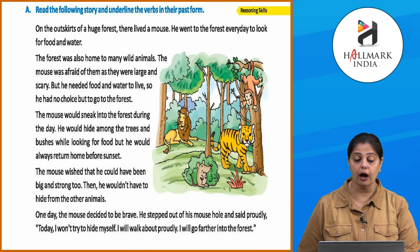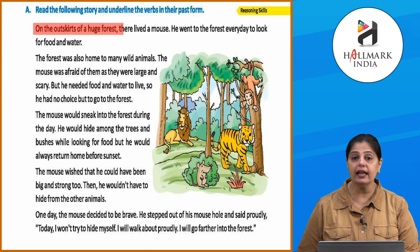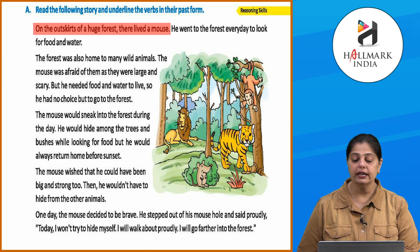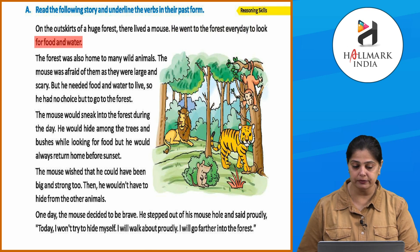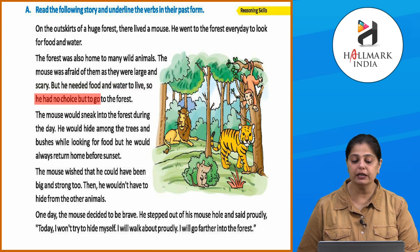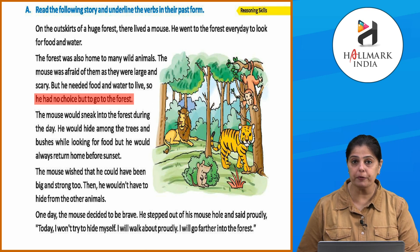Now let's attempt this exercise. Read the following story and underline the verbs in the past form. On the outskirts of a huge forest there lived a mouse. He went to the forest every day to look for food and water. The forest was also home to many wild animals. The mouse was afraid of them as they were large and scary, but he had no choice but to go to the forest. You will easily find the verbs since we have already covered action verbs.